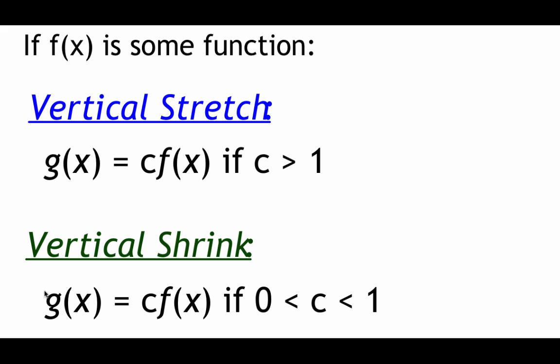Similar to that is a vertical shrink. So again, we're taking our function f(x) and multiplying it by some number c. But this time, in order to shrink our graph down vertically, we need that c value to be a fraction, like a half, a fourth, a third, something like that.